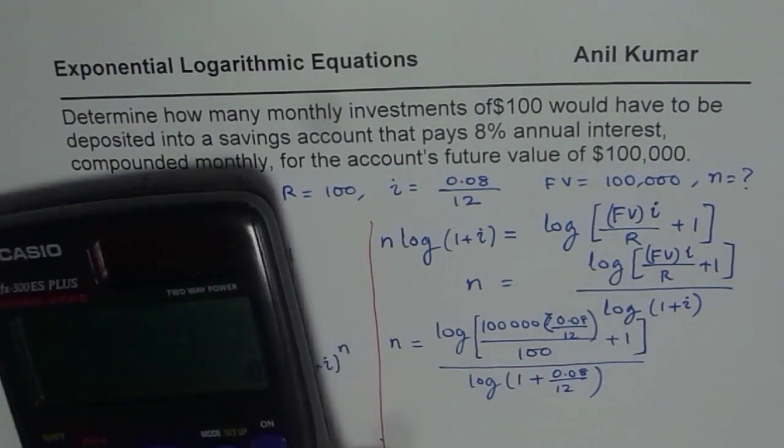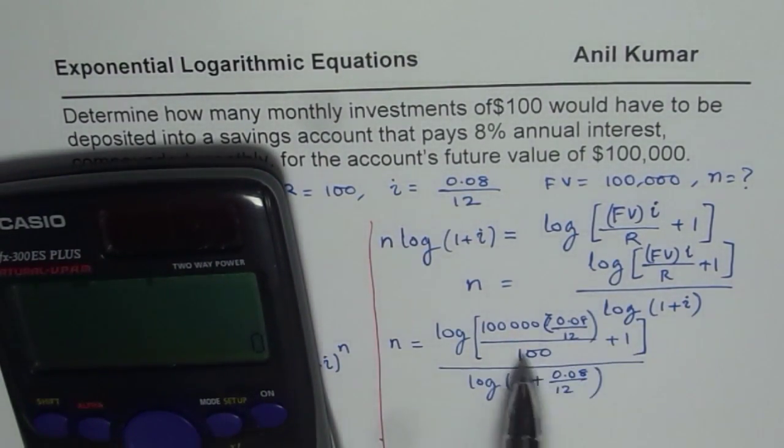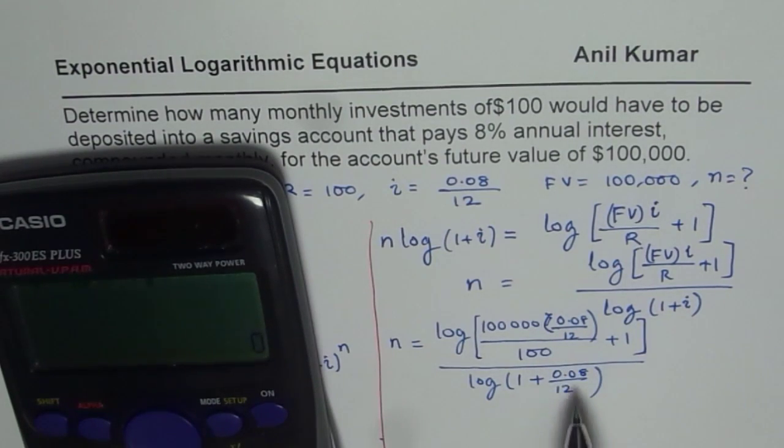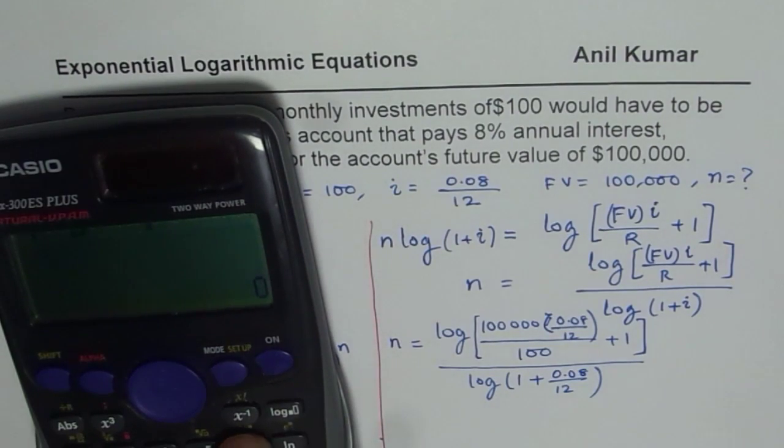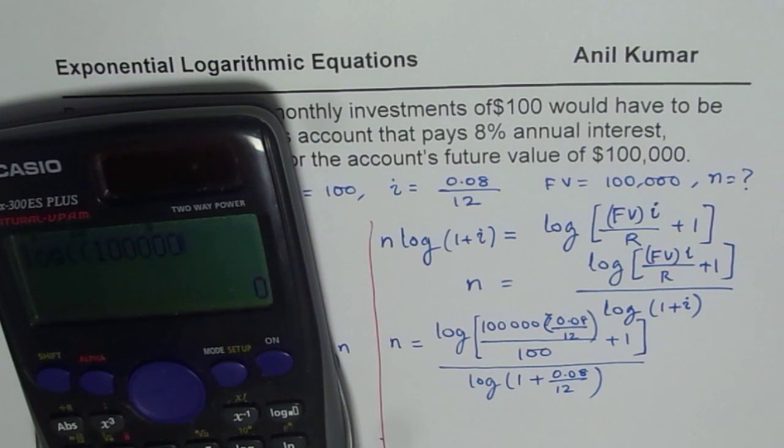Now, depending on your calculator, you should calculate these values. So we have log bracket open, 100,000 times 0.08 divided by 12. This is our first term, divided by 100, which is the R value.